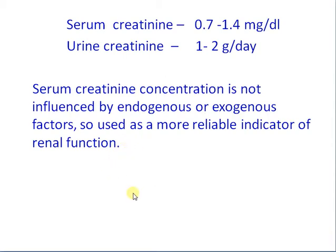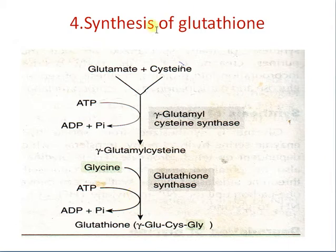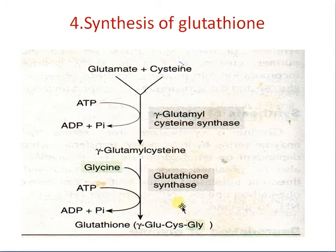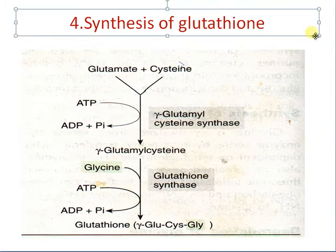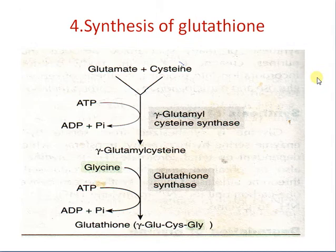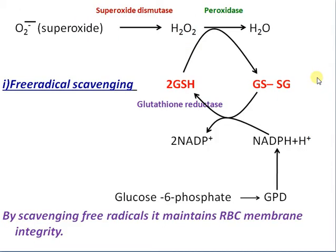Serum creatinine concentration is not influenced by endogenous or exogenous factors, so it is used as a more reliable indicator of renal function. For the synthesis of glutathione, glycine is required. The final product is gamma-glutamyl-glycine, meaning glycine is involved in glutathione formation.